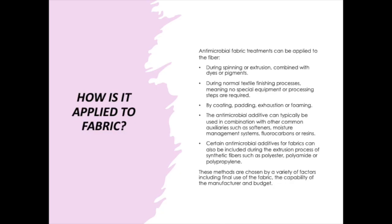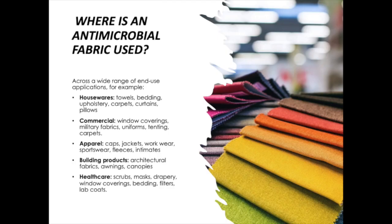How are antimicrobial treatments applied to fabric? They can be applied during spinning or construction, combined with dyes or pigments, and also during normal textile finishing processes, meaning no special equipment or processing steps are required — by coating, padding, exhaustion or foaming. An additive can typically be used in combination with other common auxiliaries. Certain antimicrobial additives can also be included during the production process of synthetic fibers such as polyester, polyamide or polypropylene.